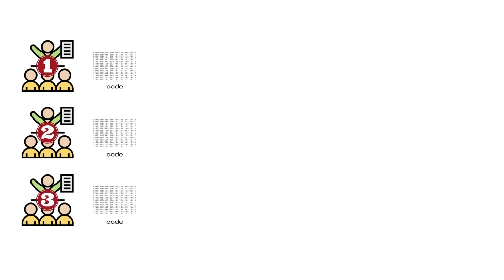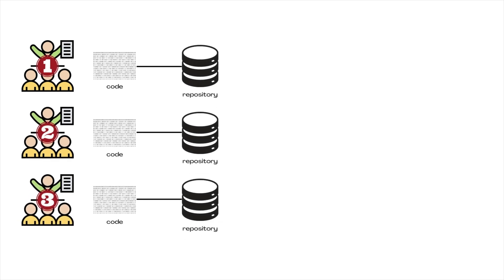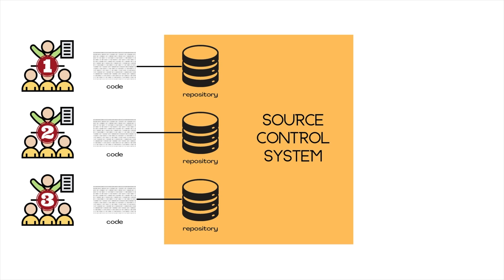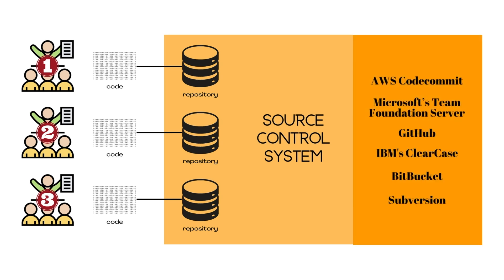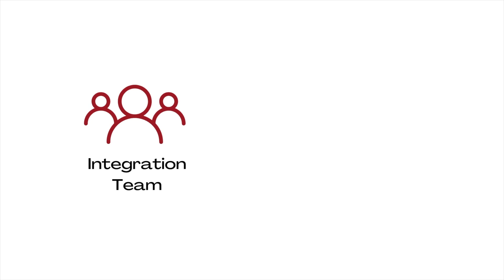During the sprint, each of the three teams checks the code they created into a separate folder — also known as a repository — which is specific to each module. These repositories are located within what we call a source control system, which is a software tool that manages code check-ins. The source control system is installed on a separate dedicated machine. Popular source control systems include AWS CodeCommit, Microsoft Team Foundation Server, GitHub, IBM's ClearCase, Bitbucket, and Subversion.